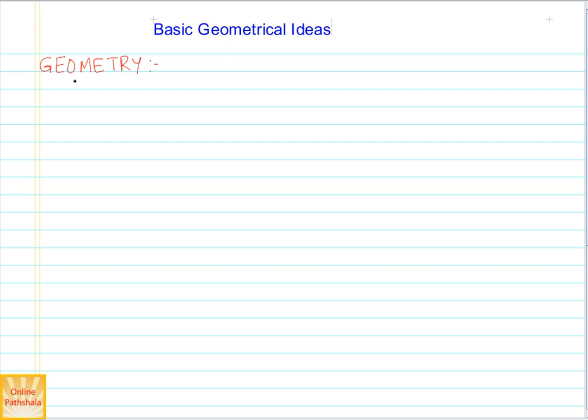This word 'geometry' is derived from the Greek word 'geometron'. If we break this word down, it is made of two parts: geo and metron. The word 'geo' means earth, whereas 'metron' means measurement.